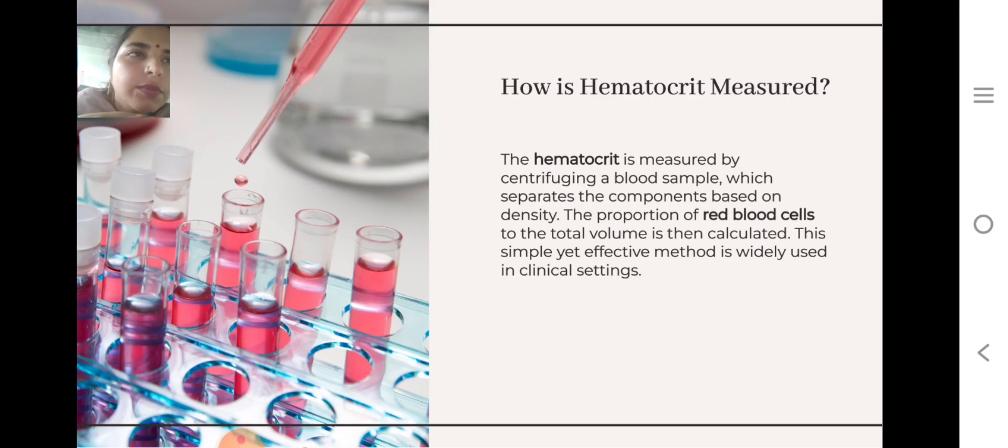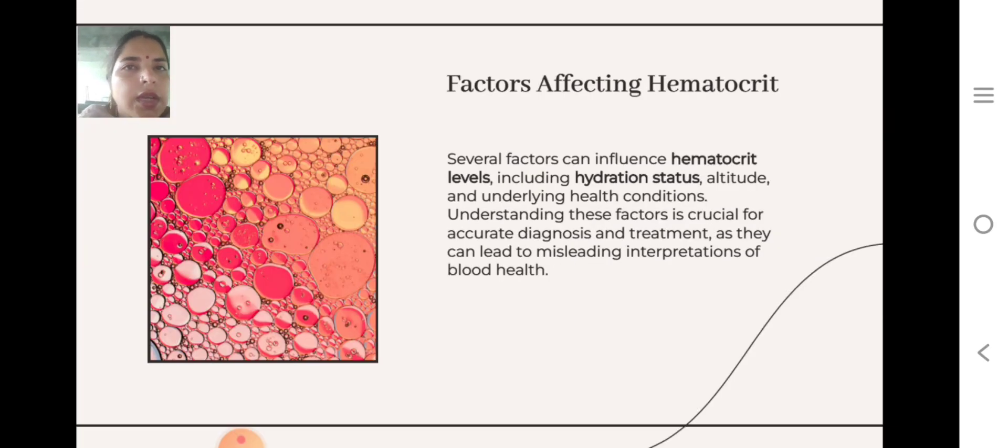How is Hematocrit Measured? The hematocrit is measured by centrifuging a blood sample, which separates the components based on density. The portion of red blood cells to the total volume is then calculated. This simple yet effective method is widely used in clinical settings.